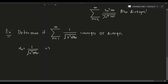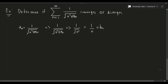For extremely large values of n, the n² term dominates the 19n term inside the square root, so we get 1 over the square root of n², which equals 1 over n. Normally there would be an absolute value, but since n is going to infinity we assume it's positive. So bₙ equals 1 over n.